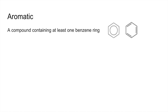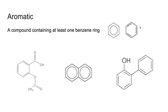Aromatic — that's just a compound with at least one benzene ring. Remember, there are two representations for benzene. So basically, as long as it's got either of those representations, it's classed as aromatic. There are three examples for you there.